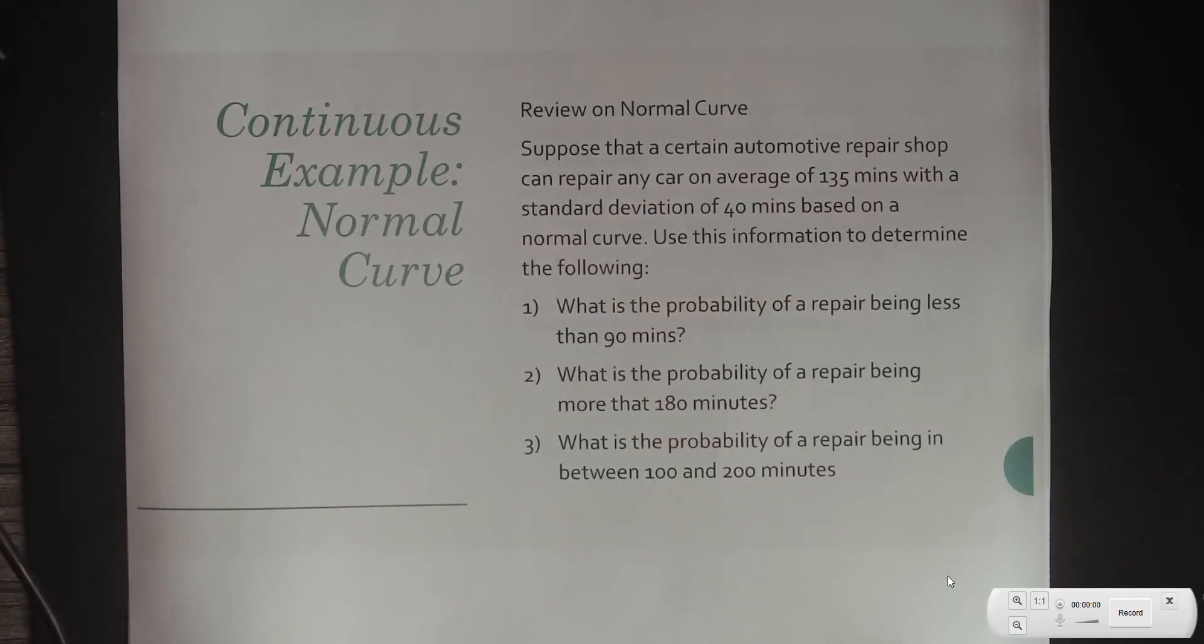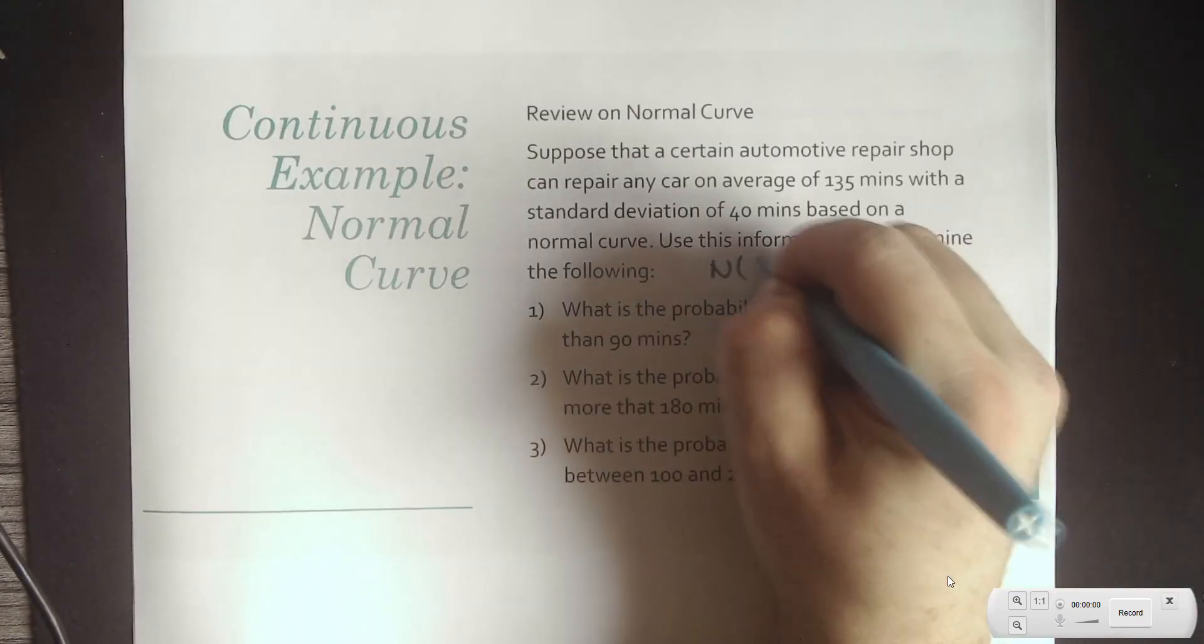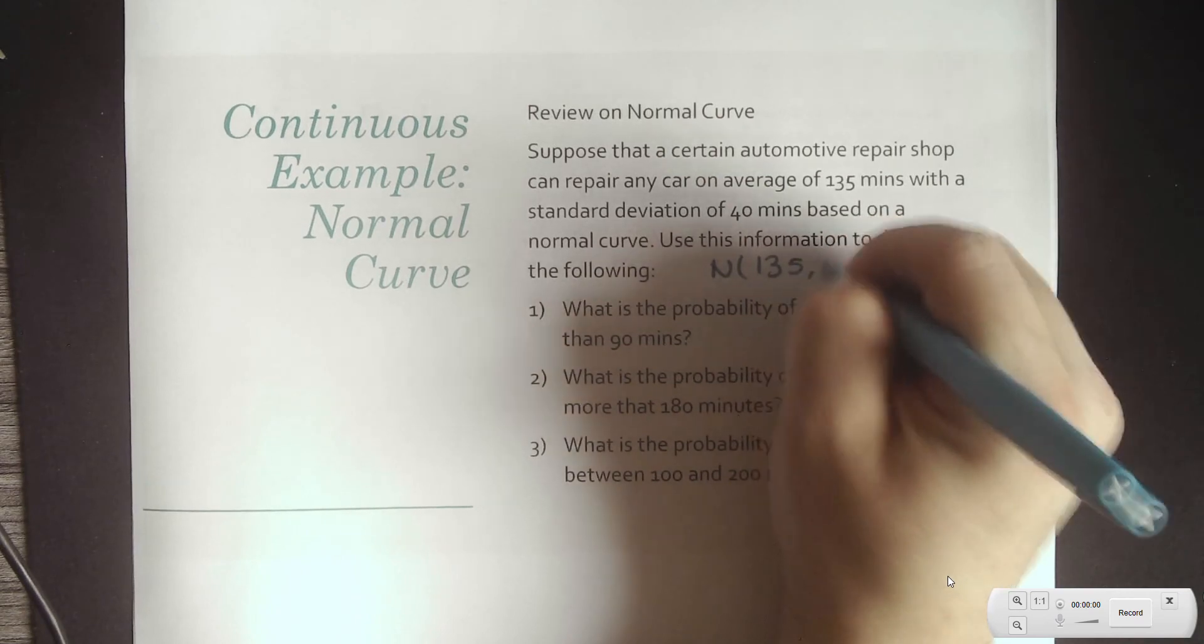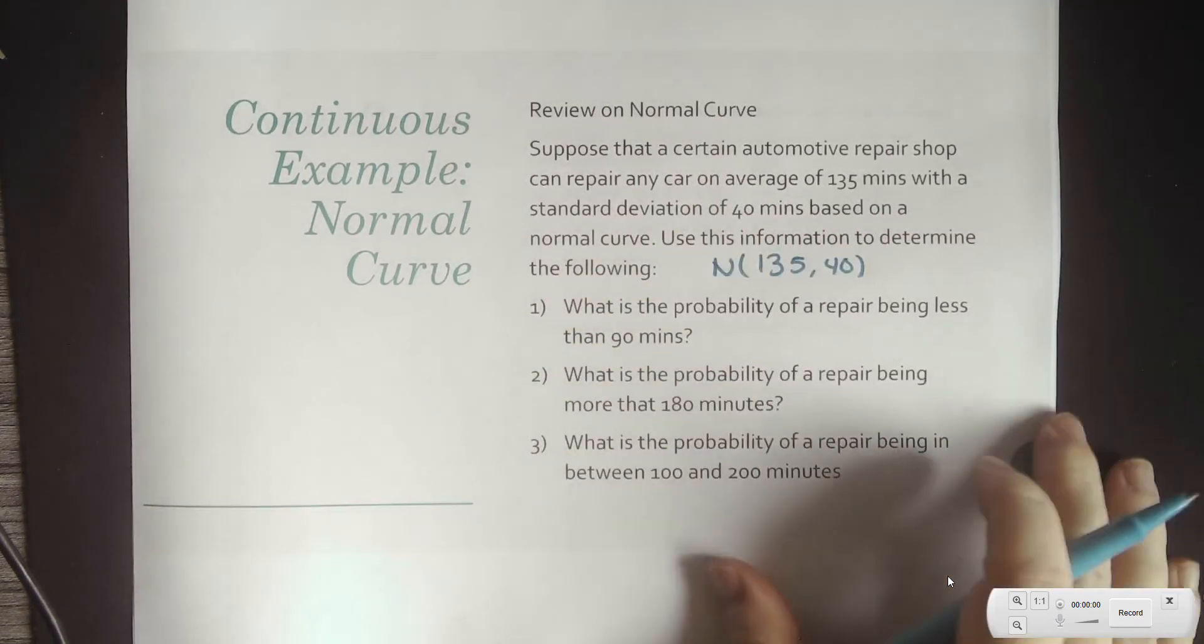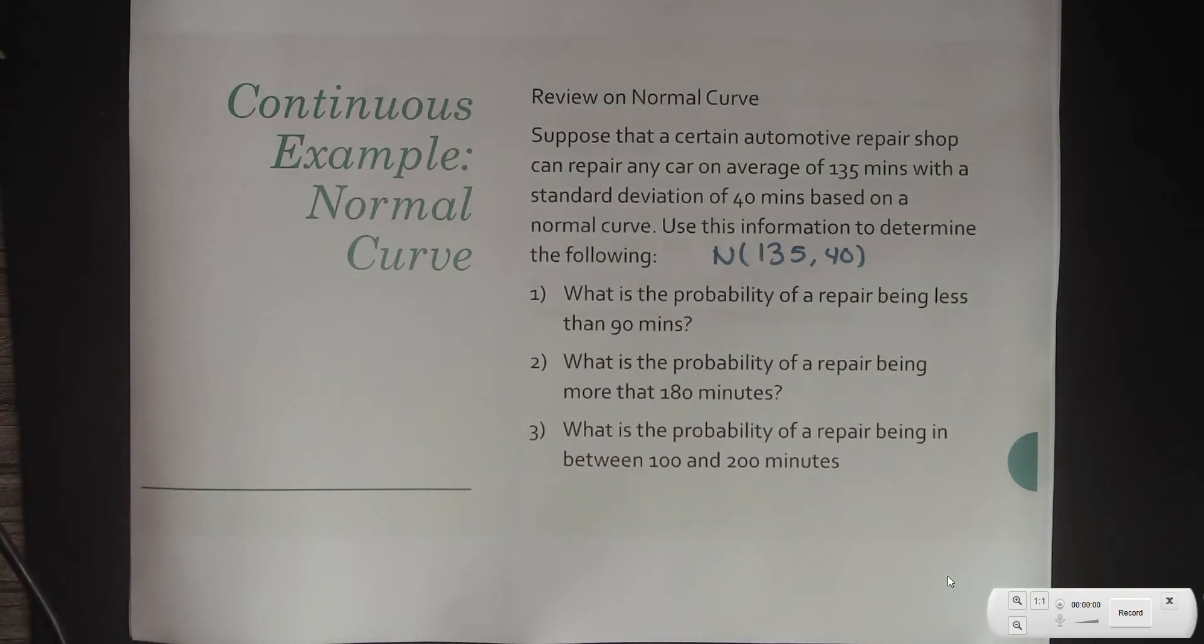So, if we do a quick review on the normal curve, suppose that a certain automobile repair shop can repair any car on average of 135 minutes with a standard deviation of 40 based on the normal curve. So, that means this particular place is 135, 40. So remember, that's the average and standard deviation. What is the probability of repair being less than 90 minutes?